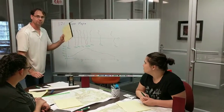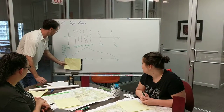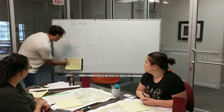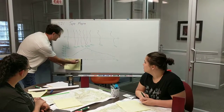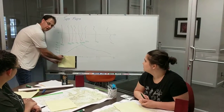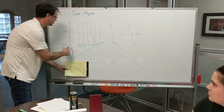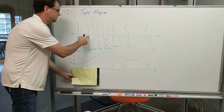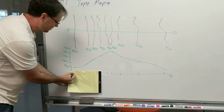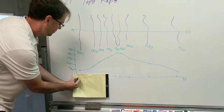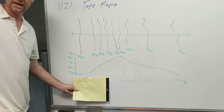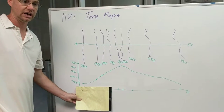We're going to lay that piece of paper down from A to B, put a tick mark where A is and where B is, and then everywhere in between that the line crosses a topographic line we're going to put a little tick mark and label what elevation that contour line is.